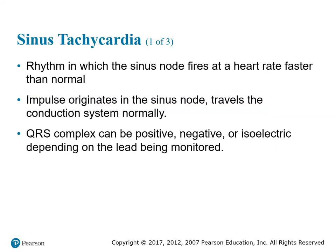The next sinus rhythm is sinus tachycardia. Sinus tachycardia is a sinus rhythm where your sinus node fires at a rapid pace — faster than the normal 60 to 100 beats per minute. The impulse still originates in the SA node and still travels down the normal conduction pathways, just at a faster rate. Your QRS complex can be either positive, negative, or isoelectric depending on which lead is being monitored.